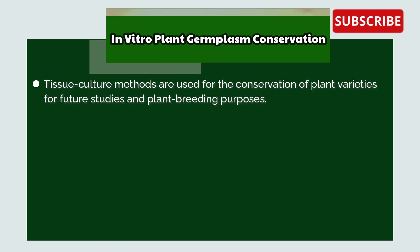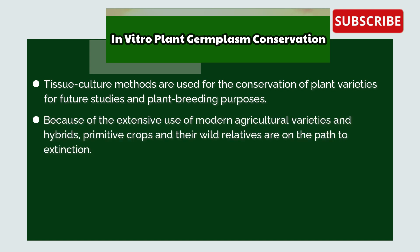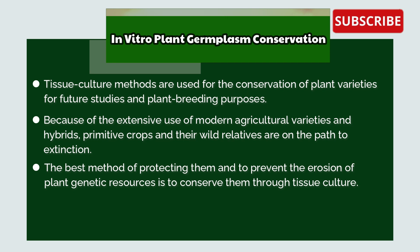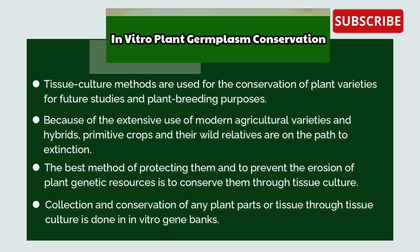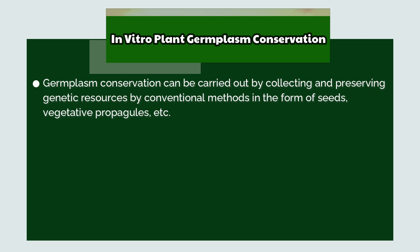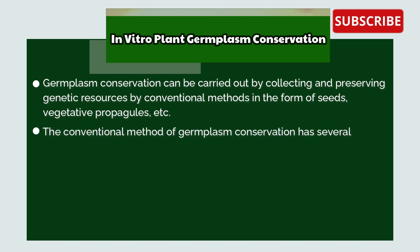In vitro plant germplasm conservation: Tissue culture methods are used for the conservation of plant varieties for future studies and plant breeding purposes. Because of the extensive use of modern agricultural varieties and hybrids, primitive crops and their wild relatives are on the path of extinction. The best method of protecting them and preventing the erosion of plant genetic resources is to conserve them through tissue culture. Collection and conservation of plant parts or tissue through tissue culture is done in in vitro gene banks. Germplasm conservation can also be carried out by collecting and preserving genetic resources by conventional methods in the forms of seeds, vegetative propagules, etc.